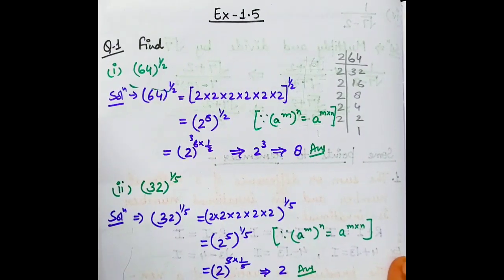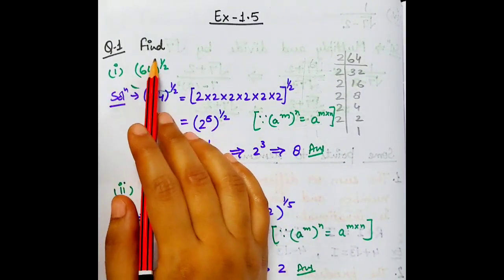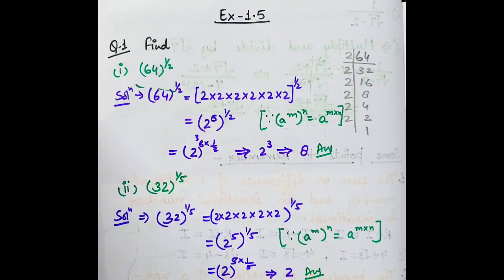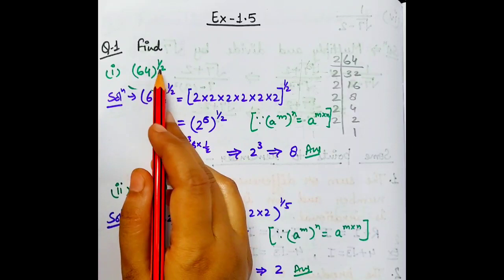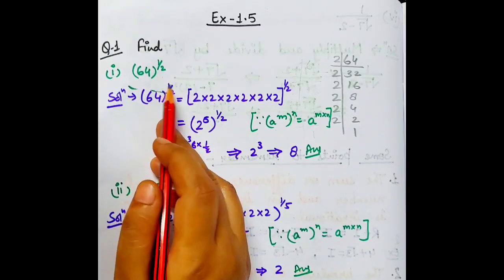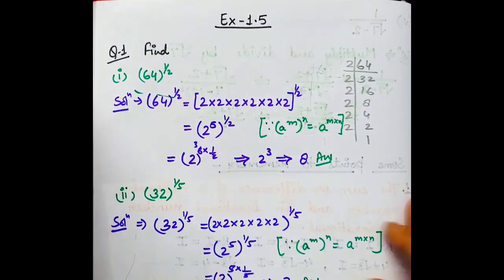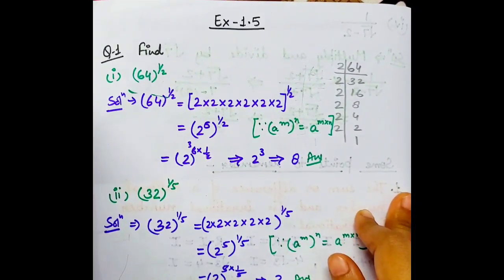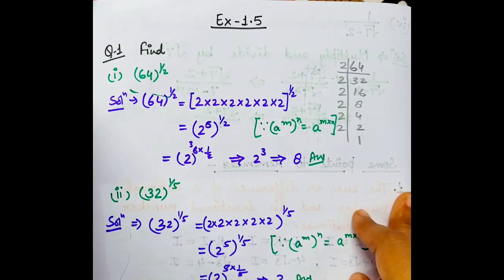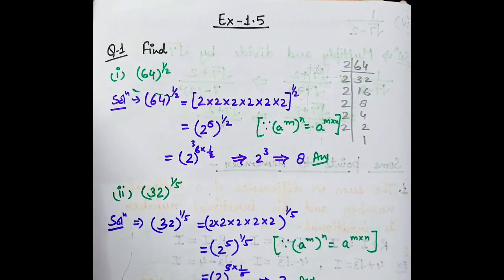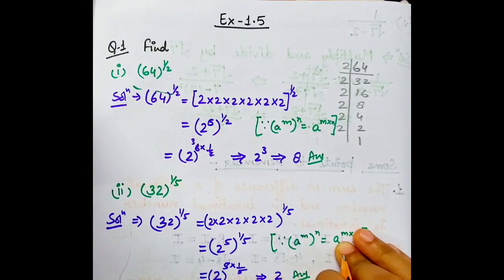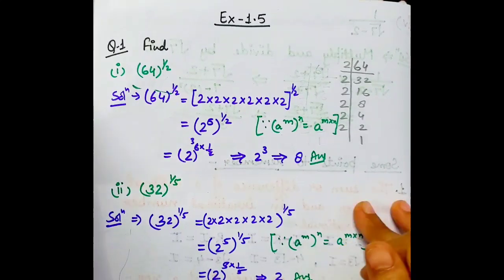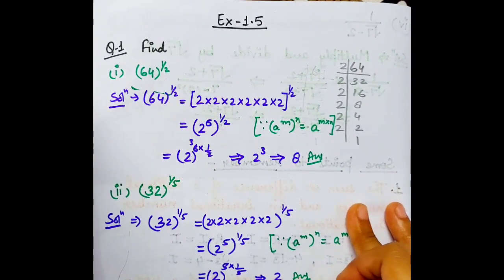Let's begin. Question number 1. Find. Hamen jo numbers diye hain unko solve karke answer nikalna hai. First: 64 to the power 1 by 2. Yahan exponents ke form mein diya hai numbers. Is exercise mein jo questions hain unko solve karne ke liye jo concept hai, jo laws hain, unpe basis ek introduction video hai jiska link description box mein diya gaya hai. To questions ko solve karne se pehle us video ko dekh lijiye, jisse questions ko solve karna easy hoga.